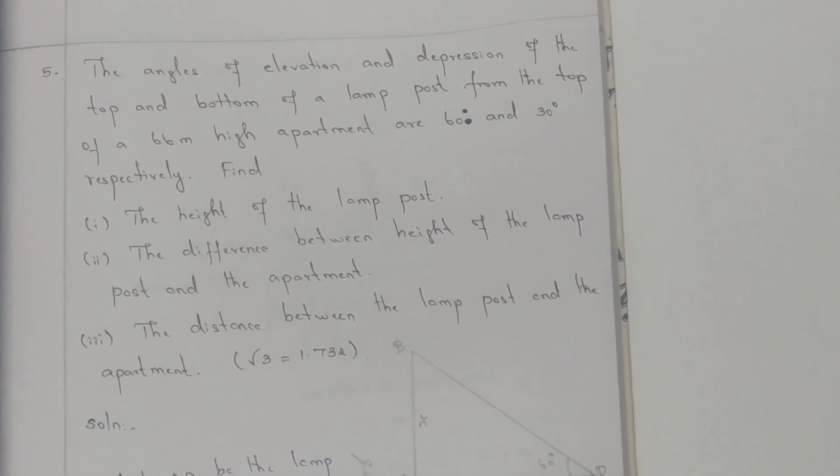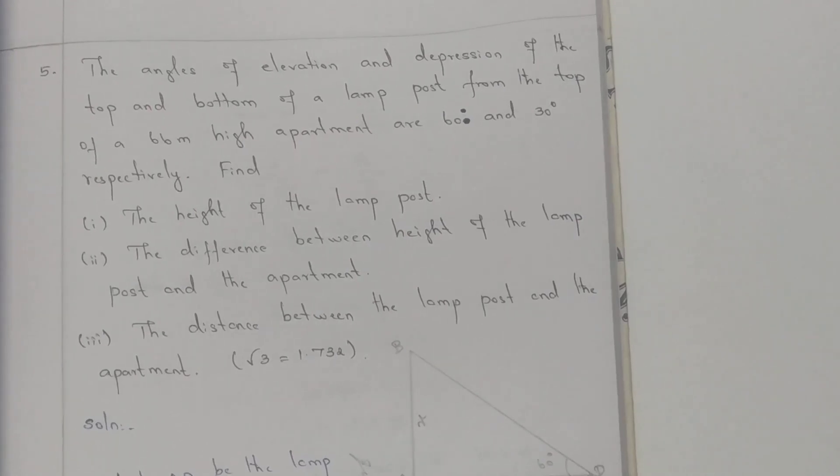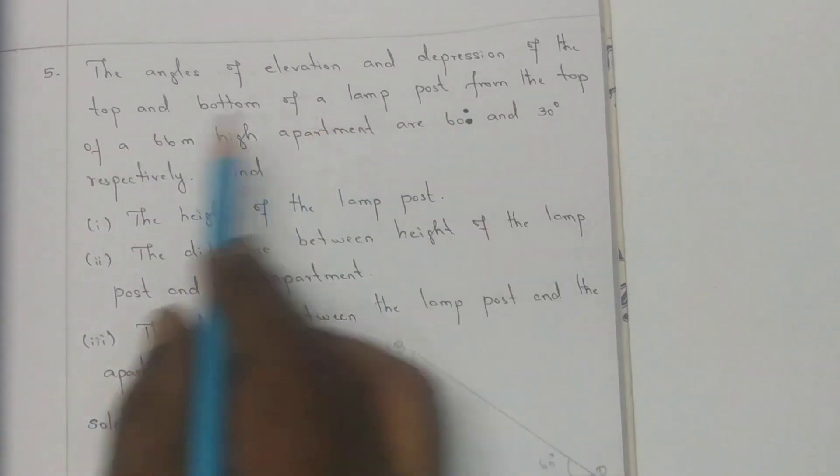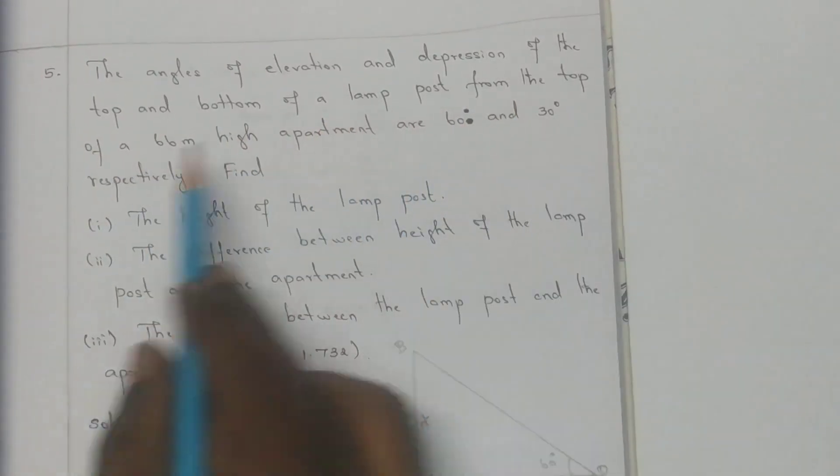Hi students, welcome to SCC mathematics. Today I'm going to cover 10th standard mathematics, chapter 6 trigonometry, exercise 6.4. The problem is: the angle of elevation and depression of the top and bottom of the lamp post from the top of a 66 meter high apartment are 60 degrees and 30 degrees respectively.